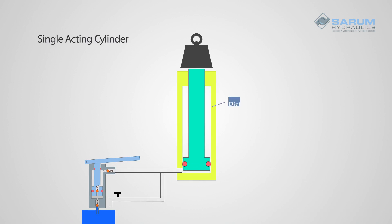A single acting cylinder has a piston rod, a cylinder barrel, a hydraulic seal, and normally a bearing to limit how far it pumps out.